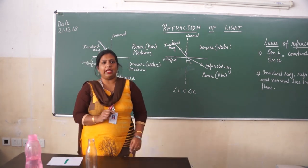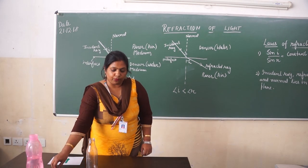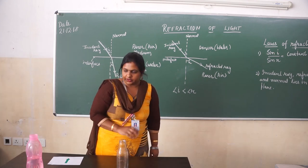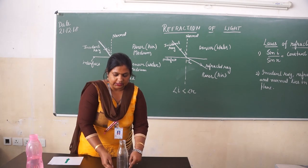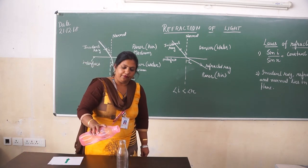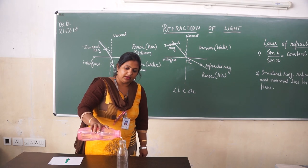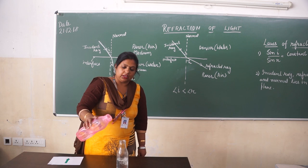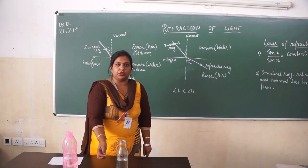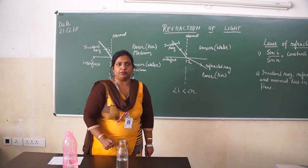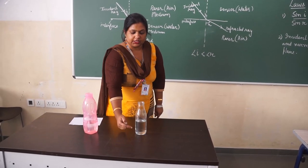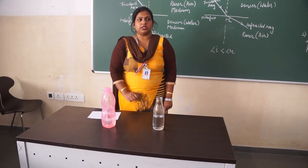We are going to show this with the help of an activity. I am going to put a coin on it, and now I am going to put a water bottle on it. Can you see that the coin is visible? Now, if we pour water on it — observe carefully — the coin will not be visible to you; it will become invisible. This is just because of refraction of light.